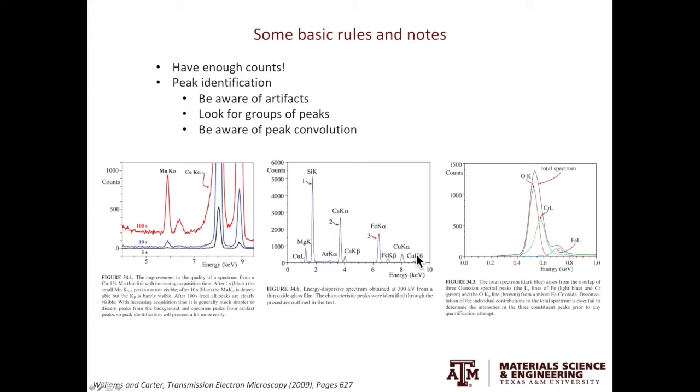For example, if you see a peak in the position of calcium K-beta, but there's no calcium K-alpha peak, most likely this peak is from an artifact. The third thing is, when you don't see a peak, it doesn't mean it's not there. It is especially important in X-ray peaks less than 1 keV.